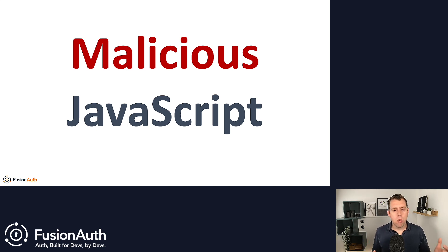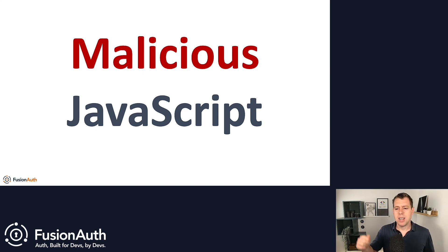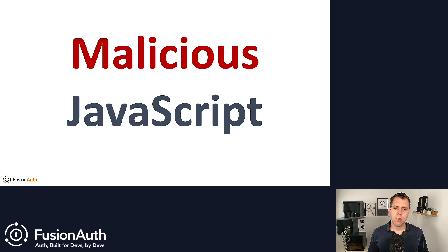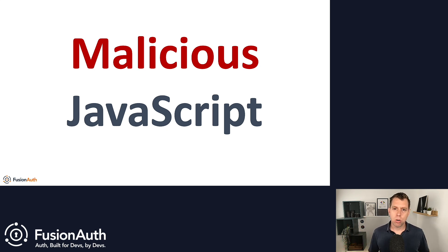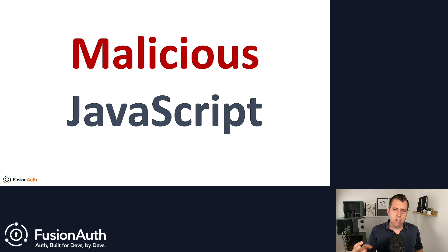How does that happen? There are a few ways. Number one, the attacker could compromise one of the packages used by the application — a dependency. If they compromise an NPM package, the code gets built into the application and executes every time the application executes. Option two, the application often loads remote code files using a script tag with a source attribute. If the attacker compromises one of these code files, the malicious code will execute. Option three is cross-site scripting. In a cross-site scripting attack, or XSS, the attacker provides data to the application and the application accidentally executes part of that data as code.